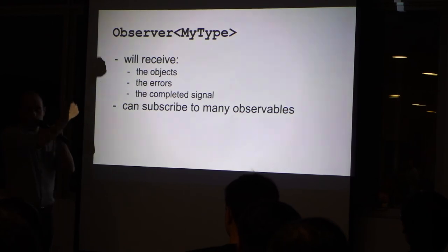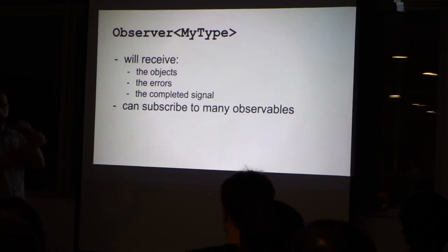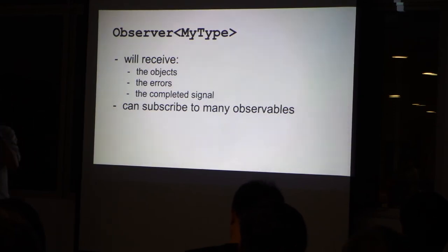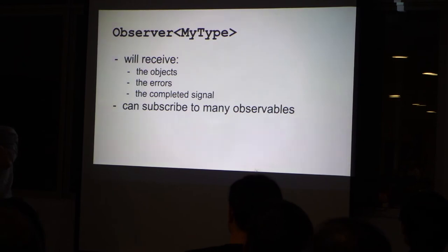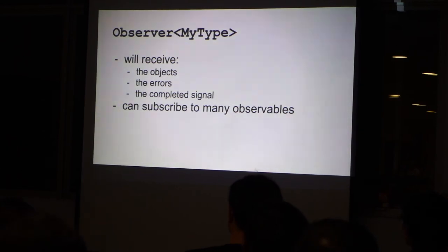So Observer, when we had earlier in the sequence of events there was then, then, then, and then there was the last, then that's the observer. Because the observable is piping the objects, the errors, and the complete signal, this is what the observer implements: three methods. Since it is an instance of a class, you can subscribe to many observables of the same type.